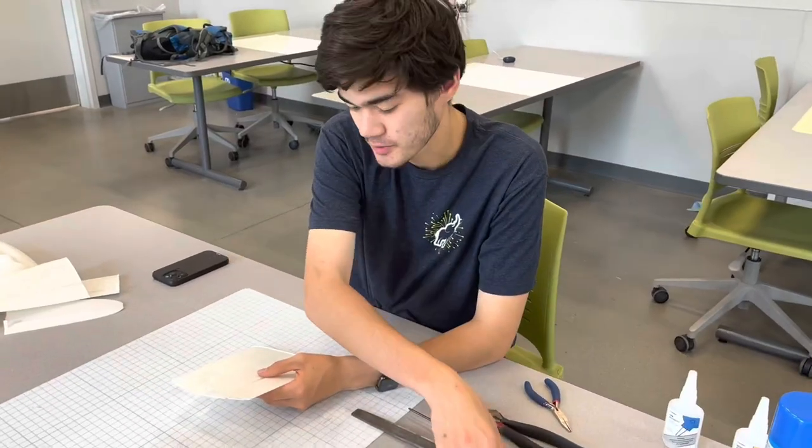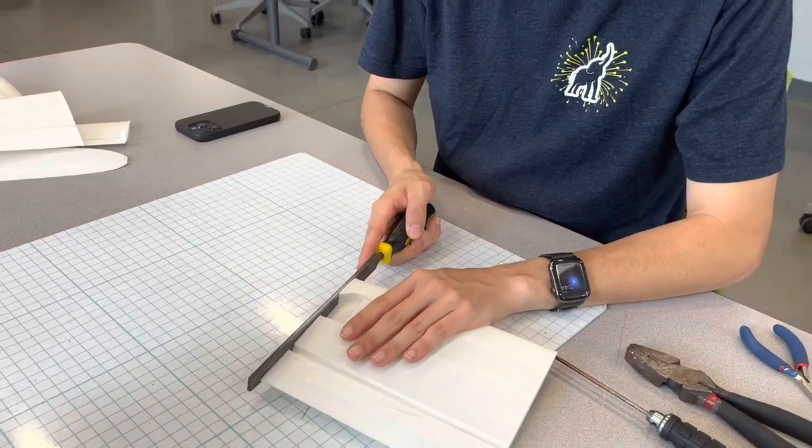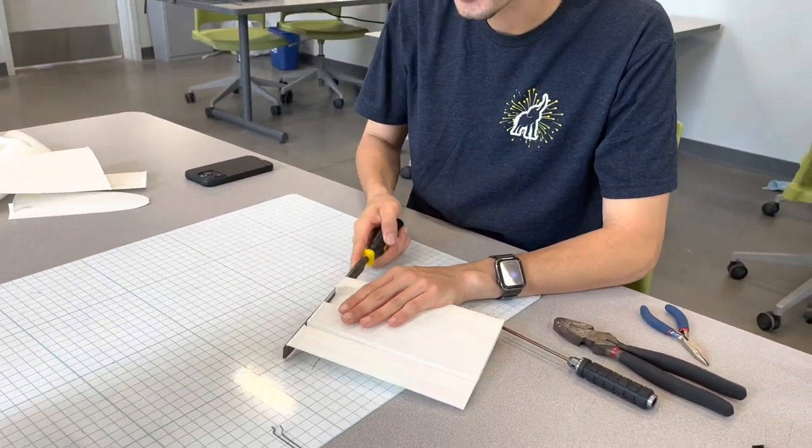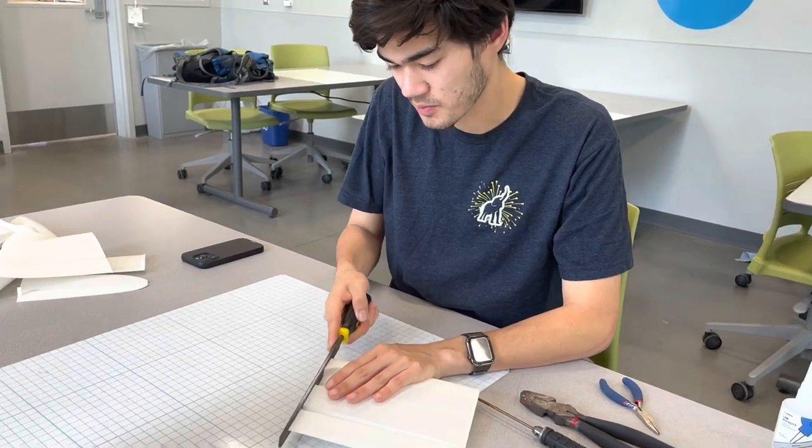Since we are using super glue to put this together, we are going to have to sand down every edge that is going to be put together. Repeat this for every piece using a file. Make sure that you sand the edges down flat, so you don't have any uneven bond.